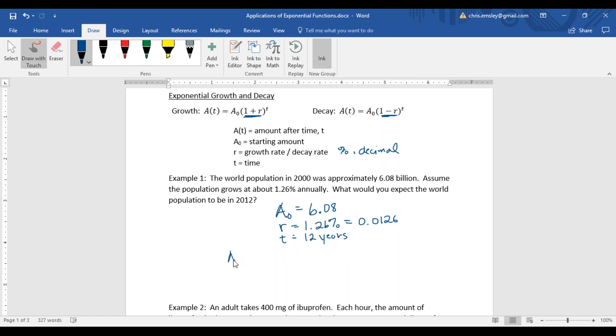We are going to calculate the population after 12 years. That's the starting value times 1 plus, since it's exponential growth, 0.0126 raised to the power of t. And t, our time in this case is 12. We've had everything plugged in, so it's just calculator work at this point.